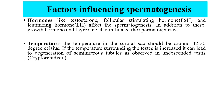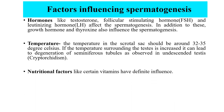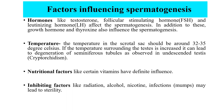Temperature: the temperature in the scrotal sac should be around 32–35 degrees Celsius. If the temperature surrounding the testis is increased, it can lead to degeneration of seminiferous tubules, as observed in undescended testis, i.e., cryptorchidism. Nutritional factors: certain vitamins have a definite influence. Inhibiting factors like radiation, alcohol, nicotine, and infections — e.g., mumps — may lead to sterility.